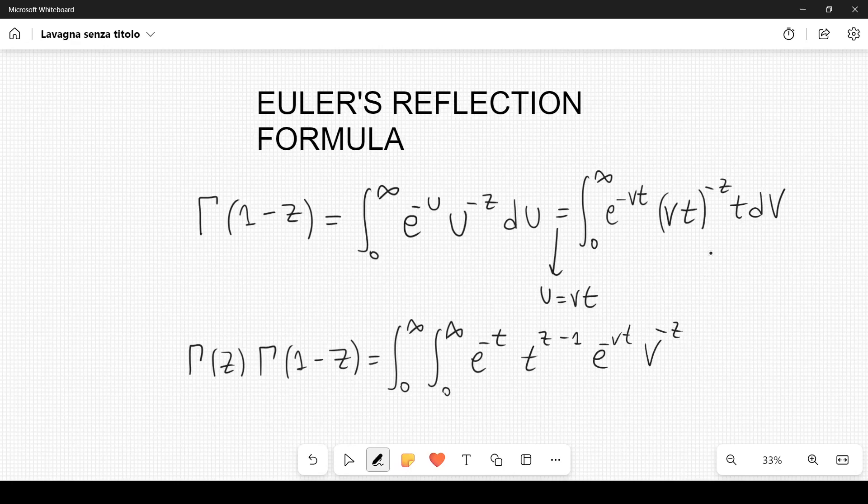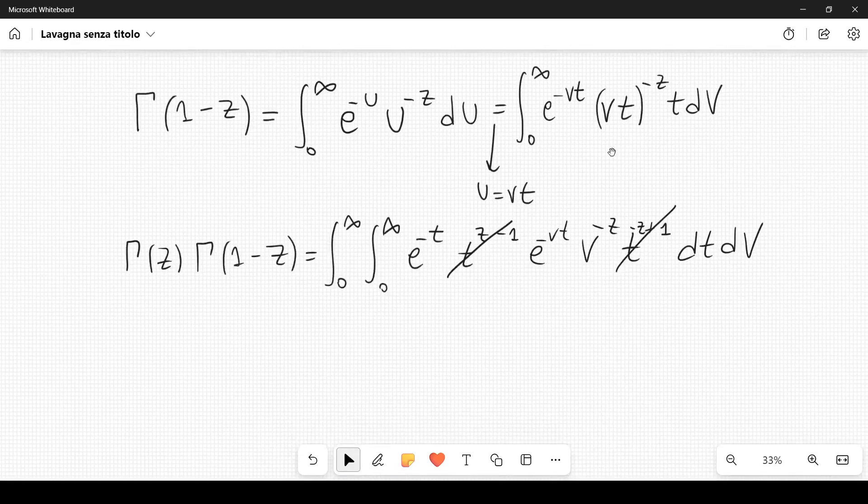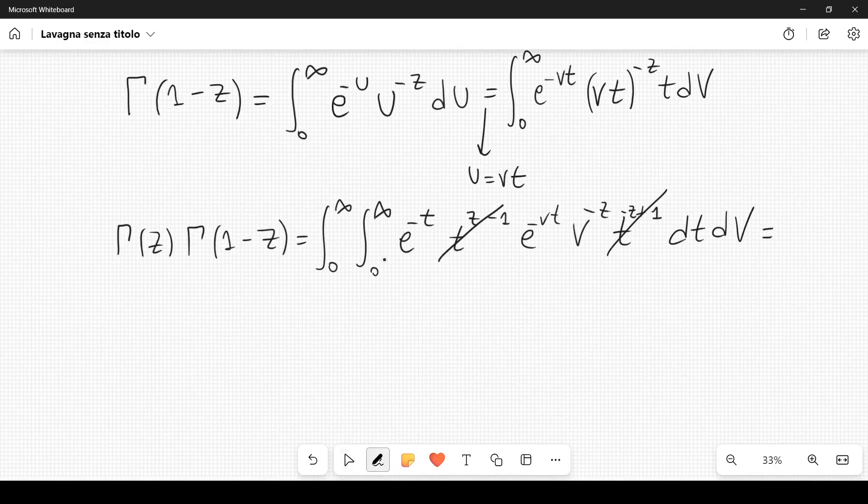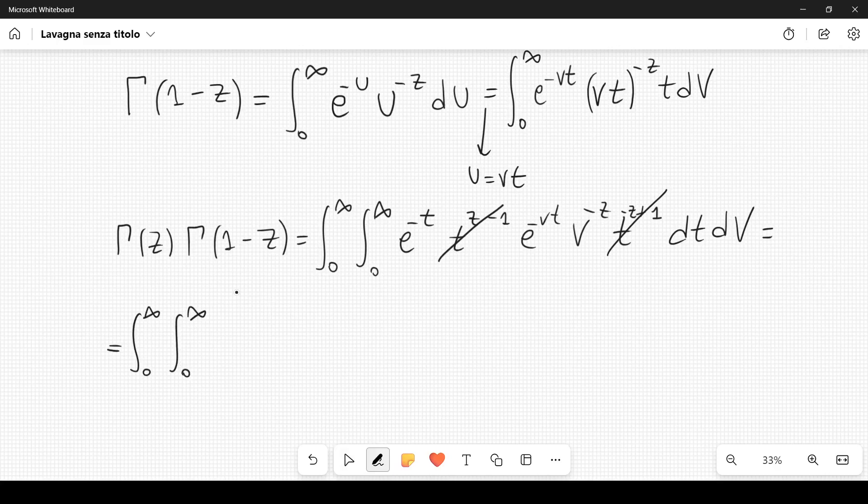Then we have t to the 1 minus z, or minus z plus 1, like this, dt dv. You can see that this will simplify with this, and therefore we are left with integral from 0 to infinity, integral from 0 to infinity, e to the minus (1 plus v) times t, v to the minus z, dt dv.